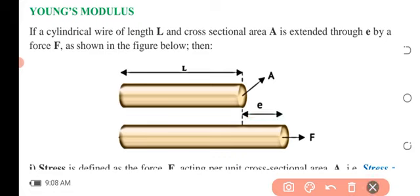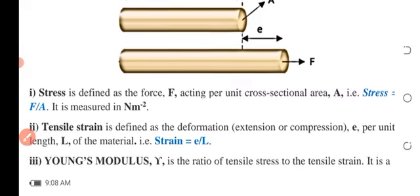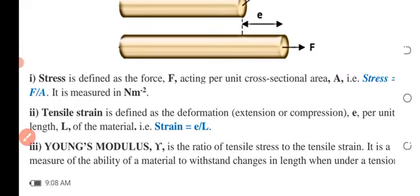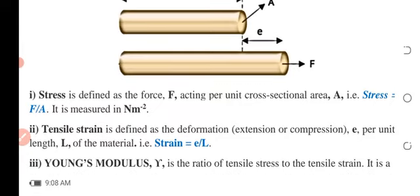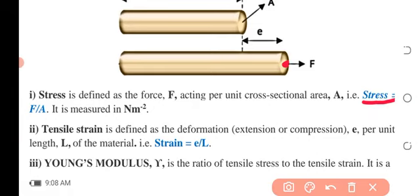The first term we are looking at before Young's Modulus is stress. Stress is defined as the force acting per unit cross-sectional area. Mathematically, stress equals force over area, and it is measured in Newton per meter square.